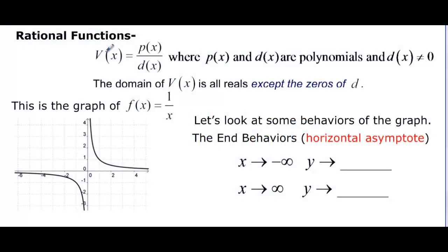This video is going to talk about rational functions. So a rational function is V(x) equals P(x) over D(x), where P(x) and D(x) are polynomials. And we just have to remember that D(x) can't be equal to zero.